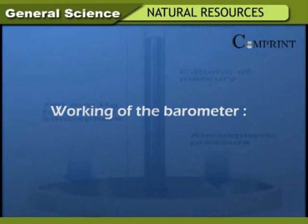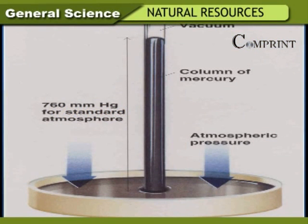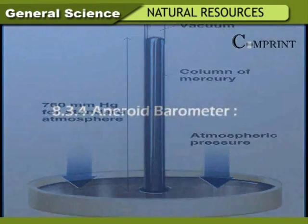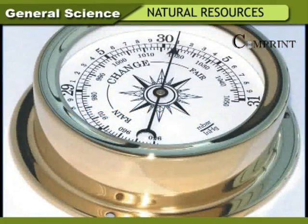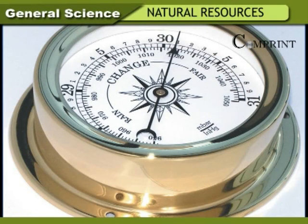Working of a barometer: The pressure exerted by the atmosphere on the surface of mercury in the trough is equal to the pressure exerted at the same level in the tube. That is why the height of 76 centimeters of mercury column is equal to the atmospheric pressure, and the height of mercury is used in measuring atmospheric pressure. This barometer is not convenient to carry from place to place. The aneroid barometer is a portable barometer because it does not use any liquid. It is used to measure atmospheric pressure in inflated tires of vehicles, and atmospheric pressure is measured in millibars.